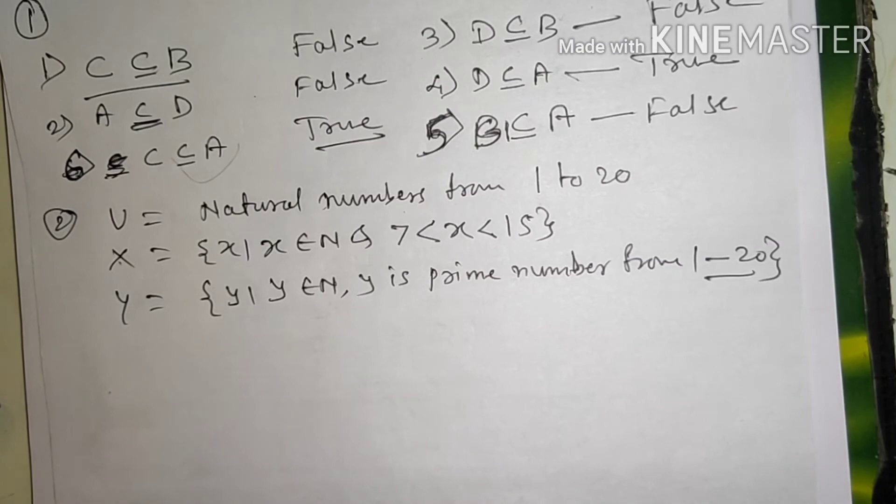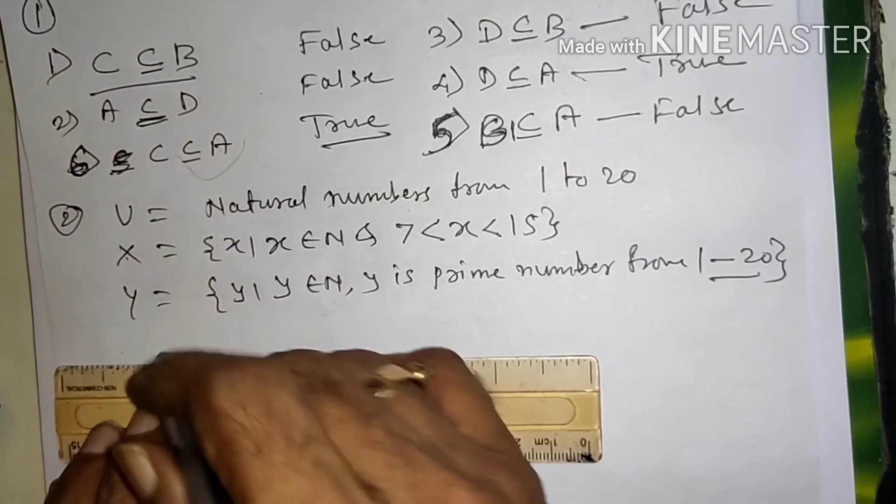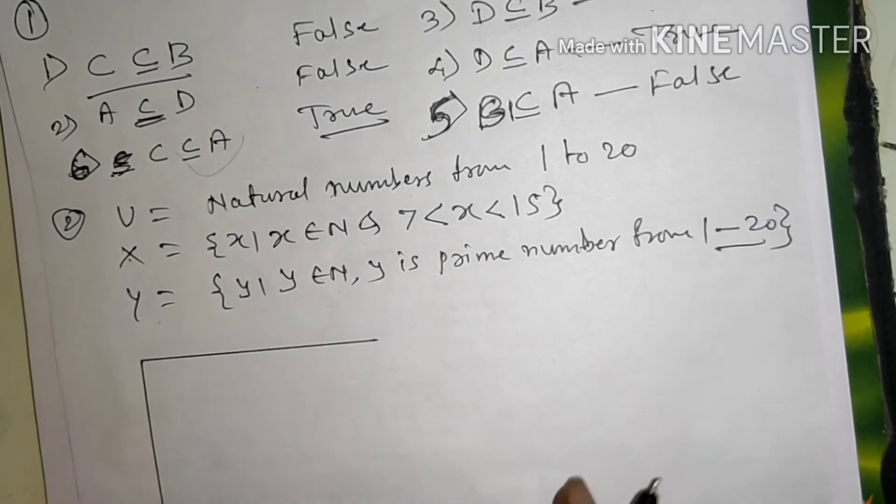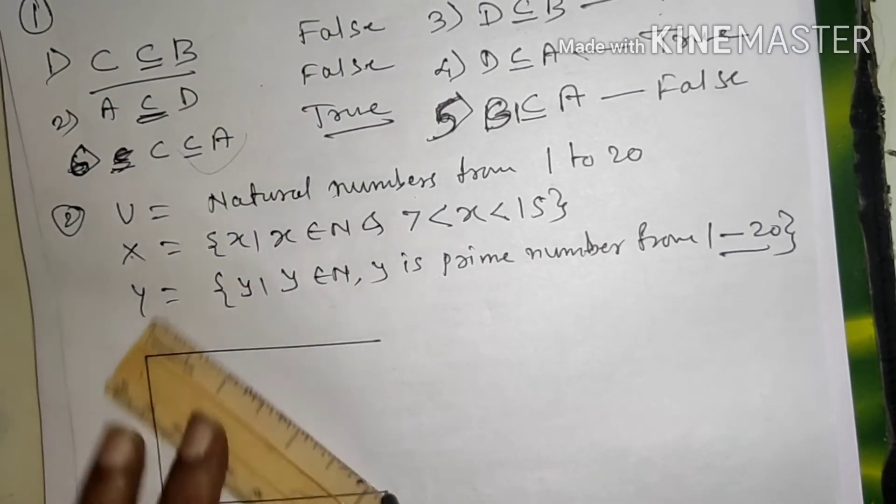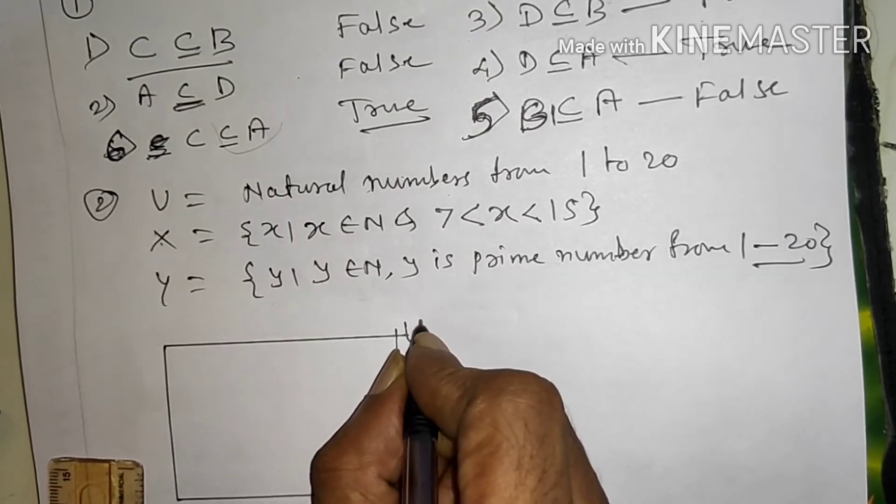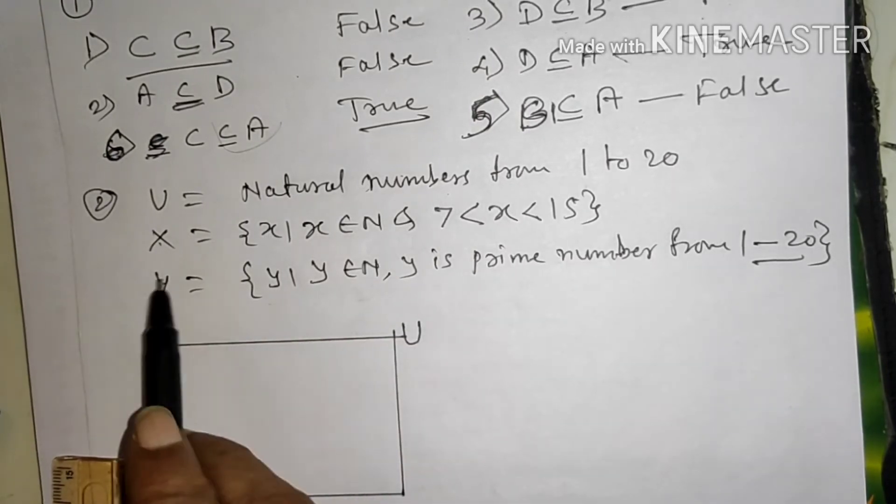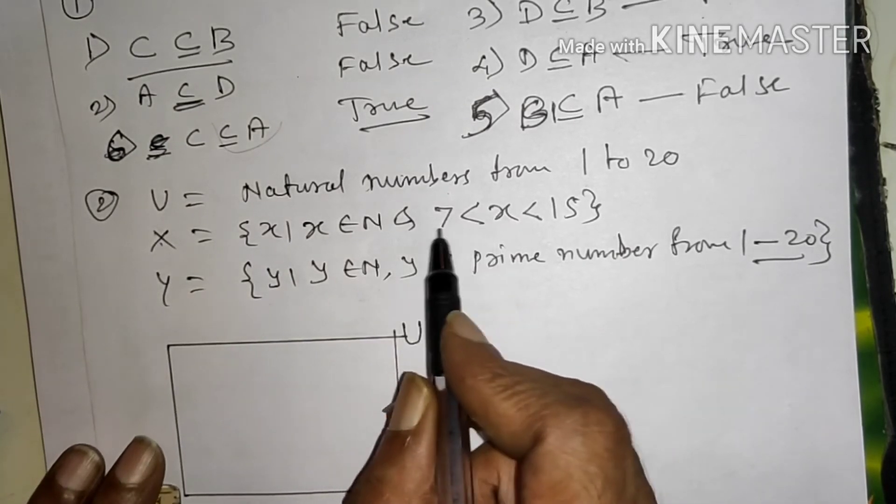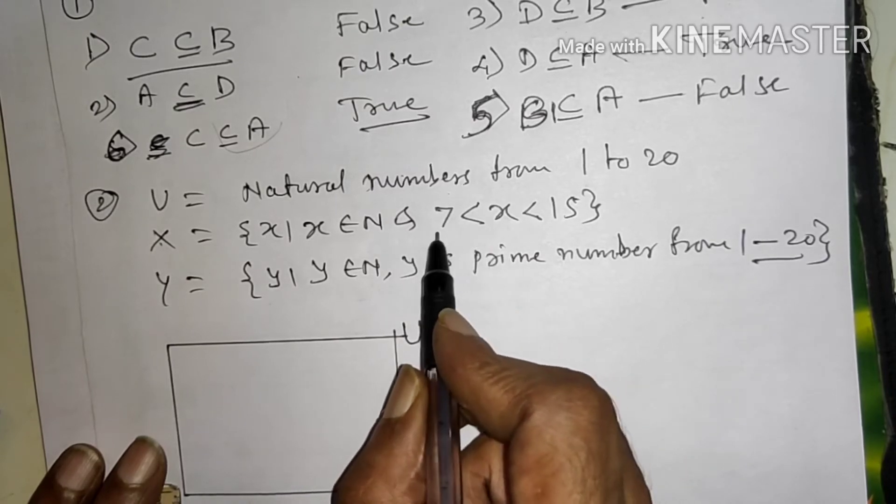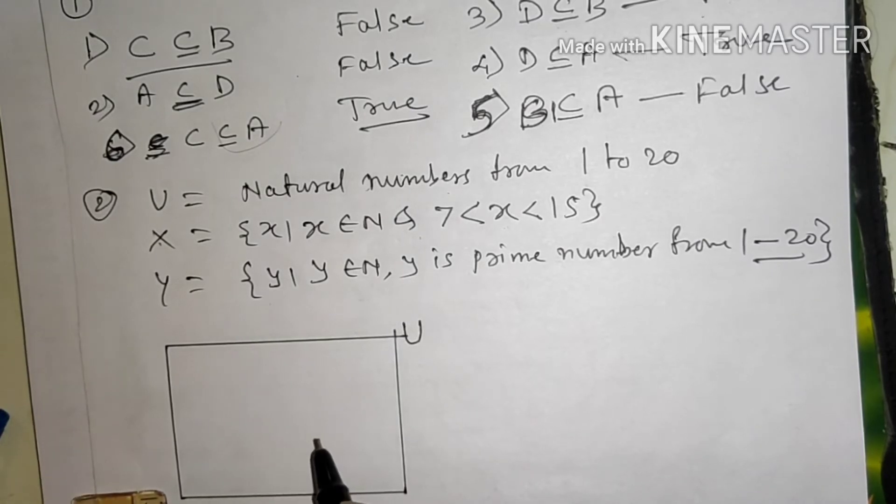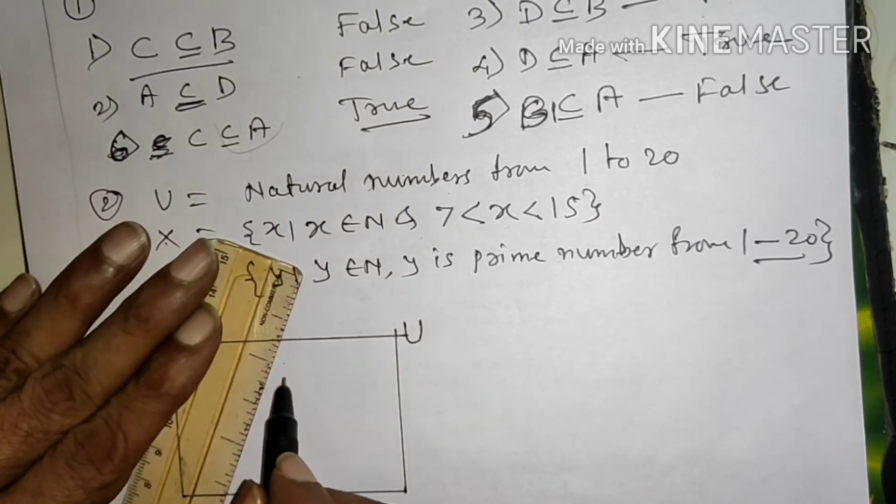To ab ye Venn diagram ke saath dikhana hai. Universal set 1 to 20 hai. X yahan dikhana hai to X hai natural numbers which is greater than 7 and less than 15. To hum ek triangle bana denge beech mein jo X dikhayega.